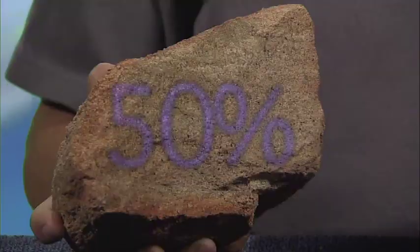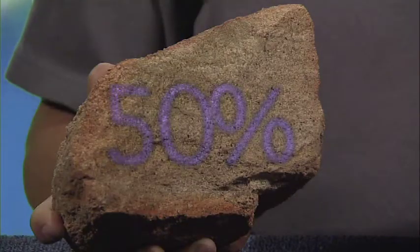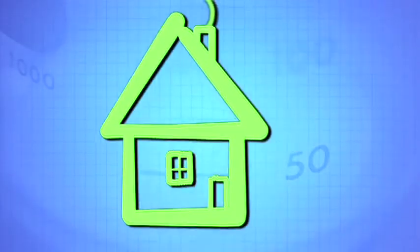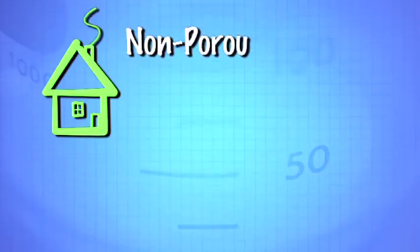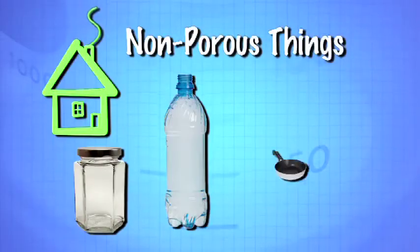A porous rock can hold much water, while a non-porous rock doesn't have much space at all. The porosity of our sandstone model is almost 50%, which means half of the total volume of the rock is airspace. The porosity of some sandstone is around 50%, while the porosity of other rocks, like granite, is less than 1%. Household examples of porous things include sponges, which hold much water. Non-porous things include glass, plastic, and metal.